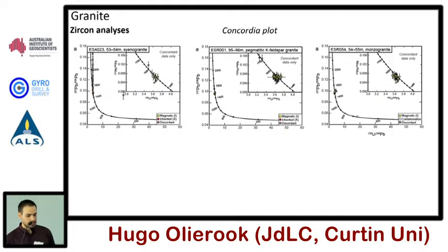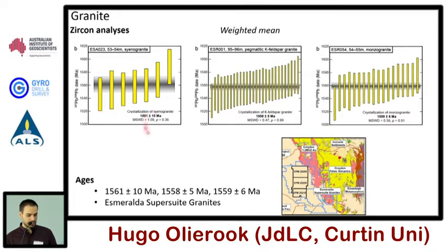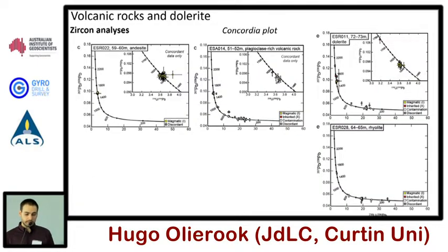With the Moho Resources project we looked at a whole bunch of different rock types — some granites, some volcanic rocks, some sediments. For the granites, I've got these big concordia plots and you can see most of the samples plot right along the concordia. Converting those to weighted means, you get ages of 1561, 1558, and 1559 Ma — with uncertainties that all overlap with each other. These pretty much overlap with the nearby Esmeralda Supersuite, so the conclusion is they're probably a continuation under cover of that supersuite.